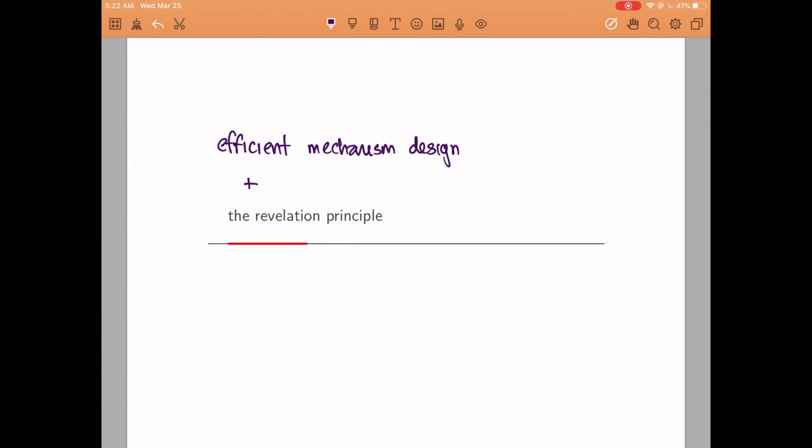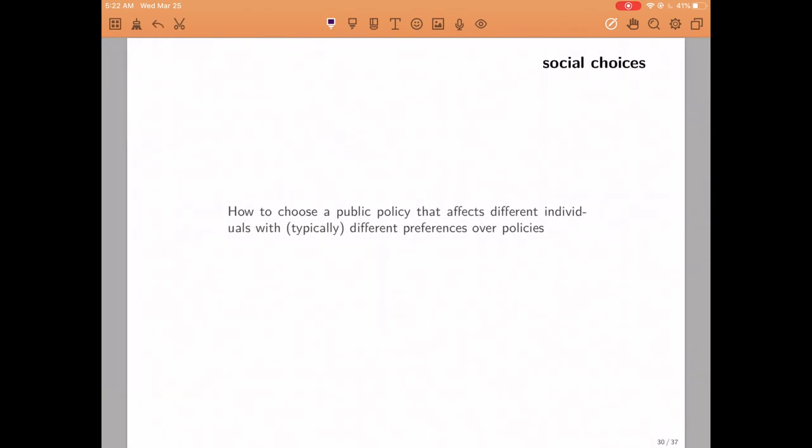In order to get started, we have to go to the very beginning of the semester when we talked about social choice problems, where we were trying to figure out as a society how to choose a public policy that affected different people with typically different preferences. The solution we came up with was that we wanted to choose what was called a Pareto efficient allocation. In general settings and in some settings where monetary transfers were possible and people have quasi-linear preferences, doing so was equivalent to maximizing the sum of utilities, so using what is known as the utilitarian criteria.